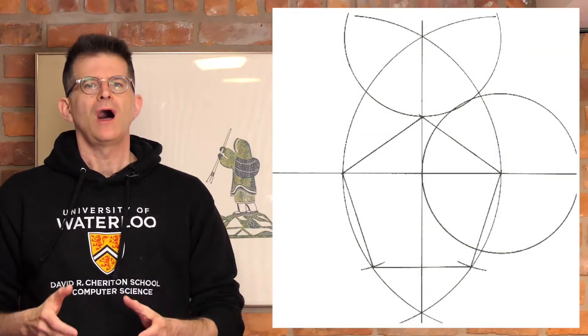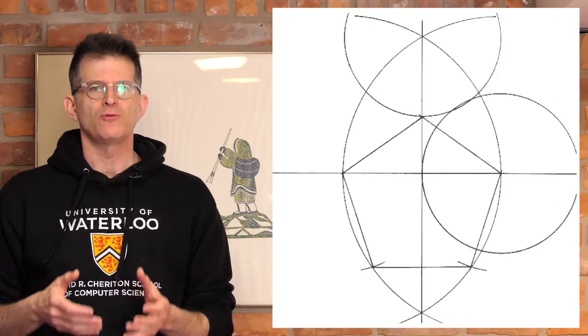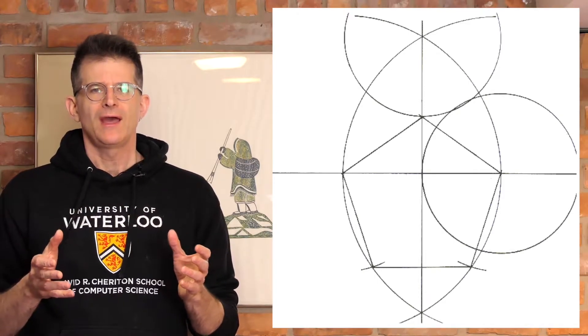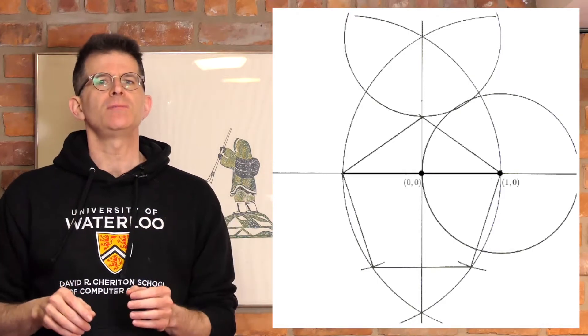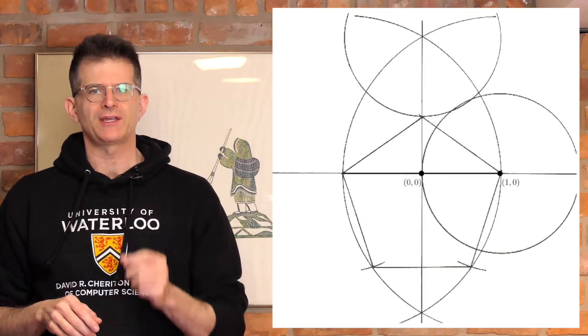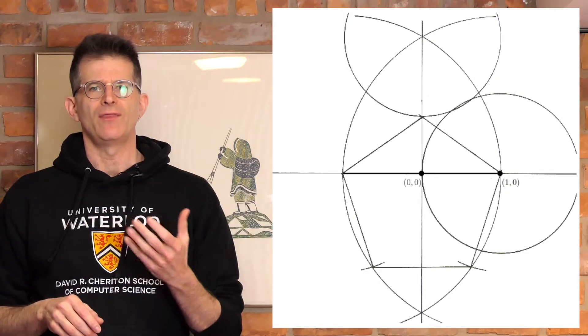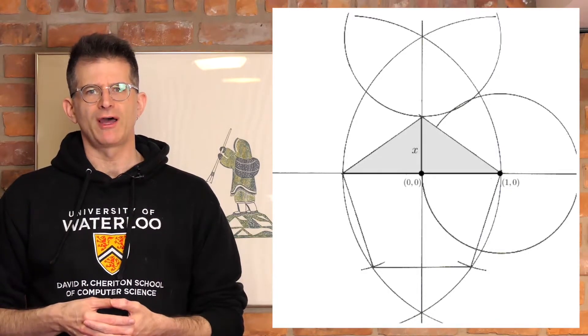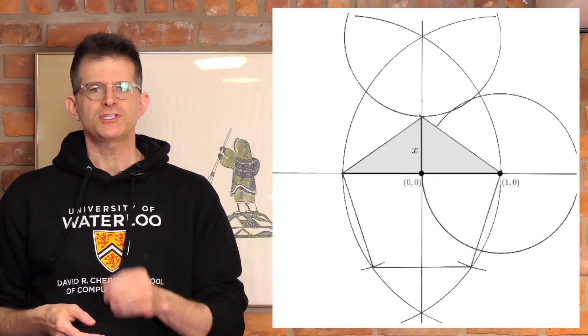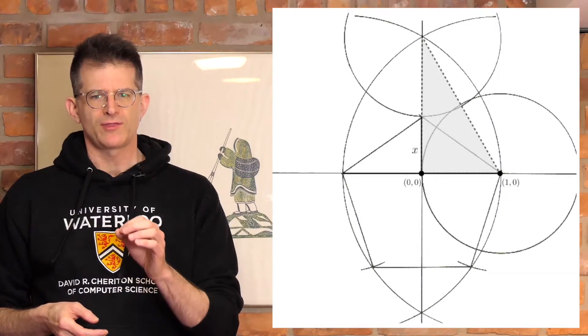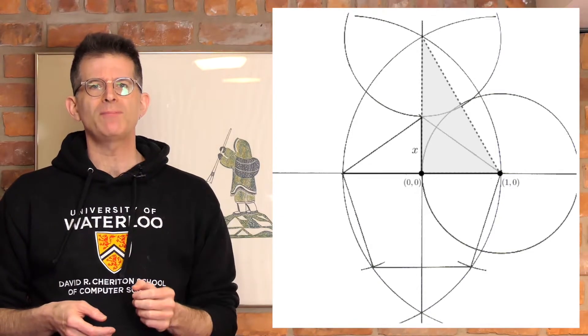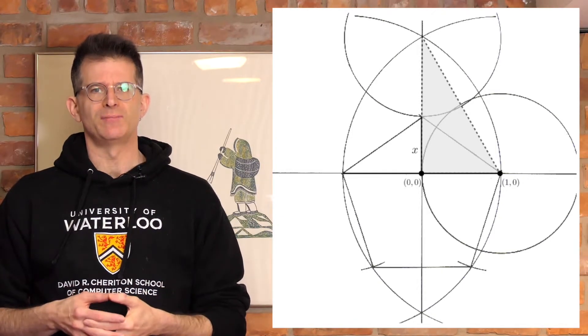Now what about the pentagon that I drew? I can show you that's not regular with a little bit of math again. Let's draw it again and label it in a similar way with the origin at the middle of that line connecting the left and right corners and the point one zero over on the right. How tall is the isosceles triangle in this case? Well, first consider the triangle with corners zero zero, one zero, and the point at the top of the diagram where the perpendicular bisector ends.